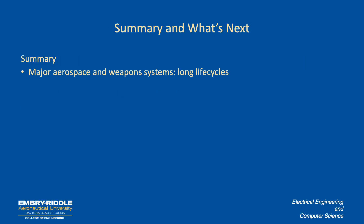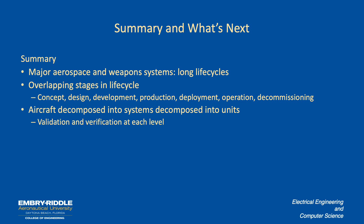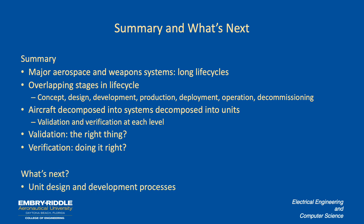Most aerospace and weapon systems have long life cycles with overlapping stages. The framing here includes seven phases: conceptualization, design, development, production, deployment, operation, and decommissioning — though other framings exist. Aircraft and aerospace systems are decomposed into smaller subsystems down to a unit level where unit testing can be performed. There is constant validation and verification at each level: validation asks 'are we doing the right thing?' and verification asks 'are we doing it right?' Next time we'll get into unit design and development processes, including the distinction between planned and agile approaches.